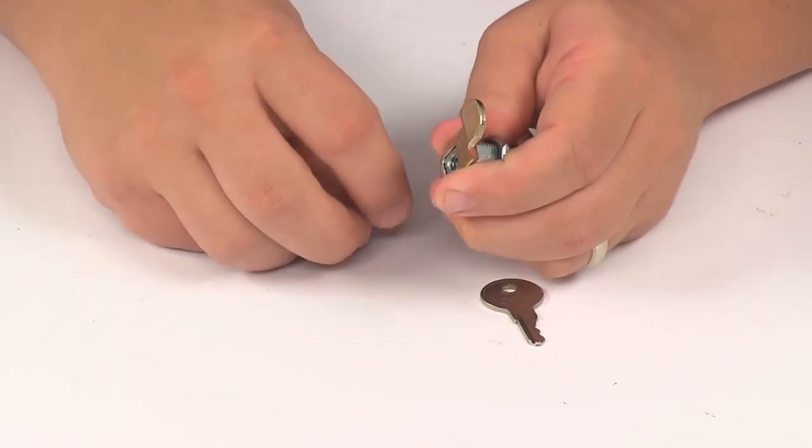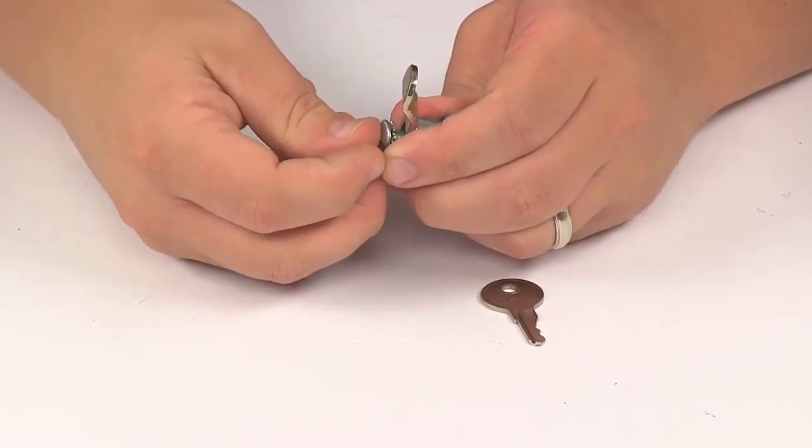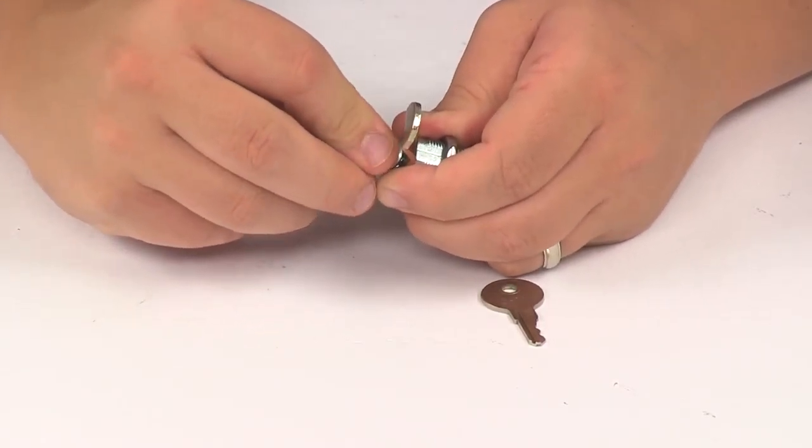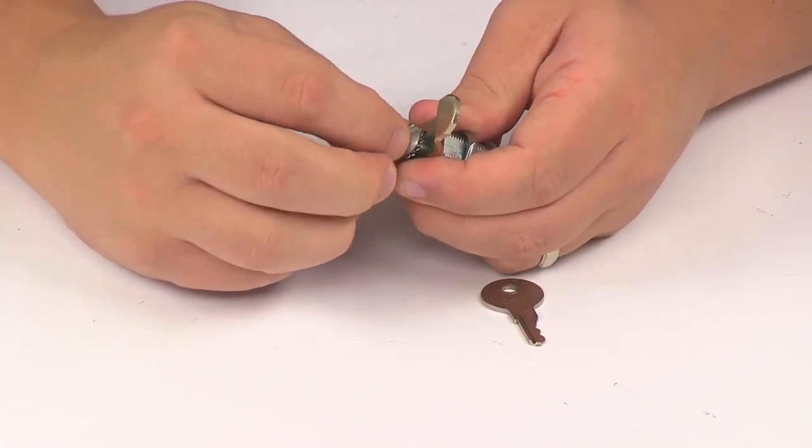It can be tightened using a seven-eighths inch wrench. Then you want to secure the lever in place, fitting it over that groove.